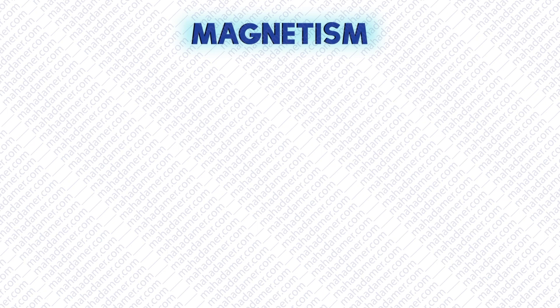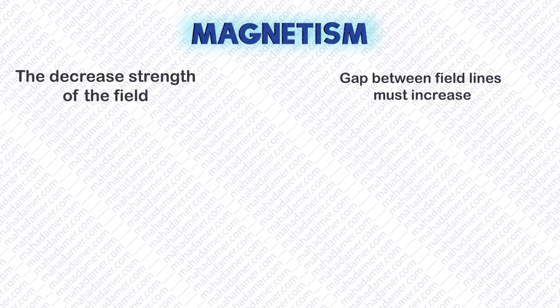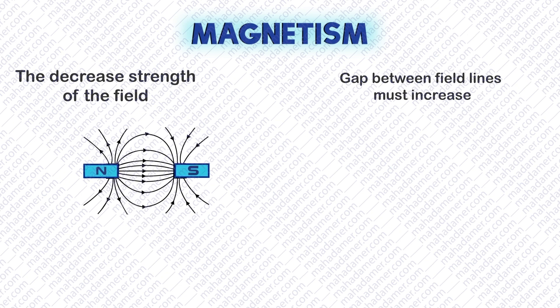While drawing a magnetic field, you should keep two things in mind. First, the gap between the field lines must increase. This shows the decreased strength of the field. You can observe in the picture that the gaps between the lines is increasing as the lines move away.